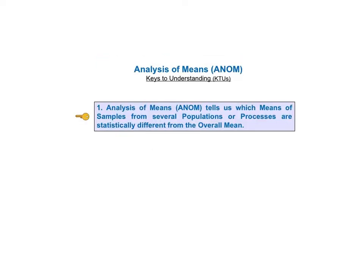As usual in the book and in these videos, we'll go quickly through a list of keys to understanding, or KTUs, and then we'll go into detailed explanations of each of the keys. For ANOM, there are three KTUs.